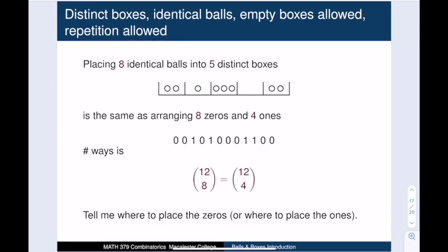So placing eight identical balls into five distinct boxes is the same as arranging eight zeros and four ones. And the number of ways to arrange these zeros and ones is twelve choose eight. I need to tell you where to put those eight zeros. Of course, this is also equal to twelve choose four. This corresponds to telling you where to put the four ones.